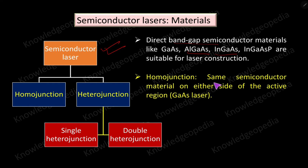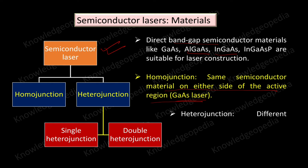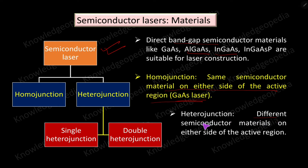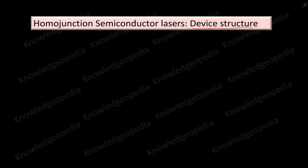A homojunction laser is a laser in which the semiconductor material on either side of the active region is of the same type. Gallium arsenide laser is an example of a homojunction semiconductor laser. In a heterojunction semiconductor laser, different semiconductor materials are present on either side of the active region — for example, one side may be gallium arsenide and the other side indium gallium arsenide or some other material.